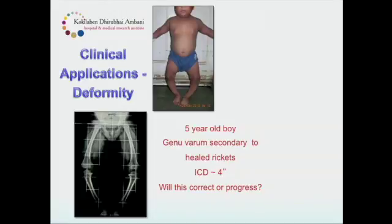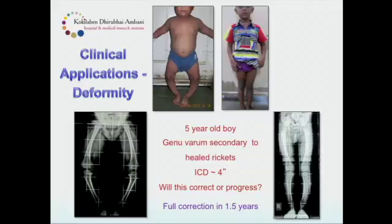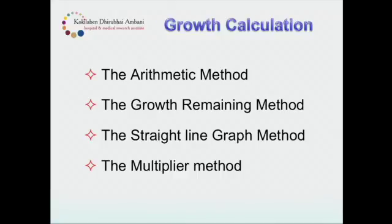A frequent scenario in deformity is a child with genu varum secondary to rickets — intercondylar distance of four inches. Will this correct with growth? What's the prognosis? Knowing the natural history, as Farooq has shown us, growth is a great leveler. If we leave this alone and observe, this child will remodel completely. To answer growth calculation questions, we're called upon as orthopedic surgeons to be almost like astrologers — predicting for that family the chance of a complex procedure and at what time in the child's life, so they can prepare mentally, financially, and emotionally.